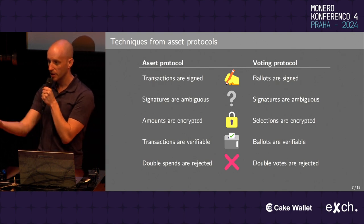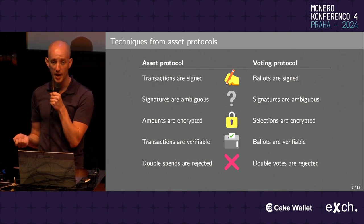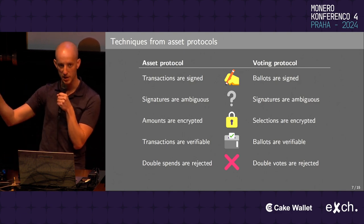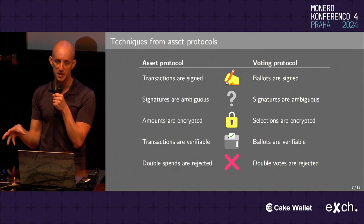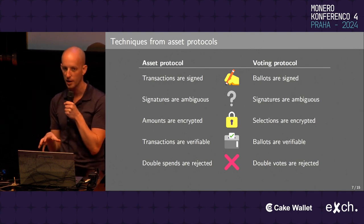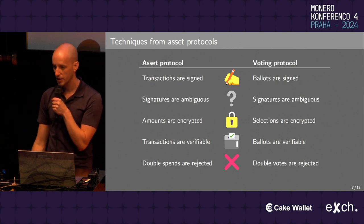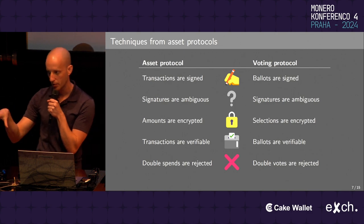One way to meet all four goals is to take techniques already used in privacy-respecting digital asset protocols and move them into the ballot and voting space. Many of the same cryptographic primitives and constructions can be more or less transferred over. Let's look at some aspects of private transaction protocols and see how they might correspond to voting protocols.